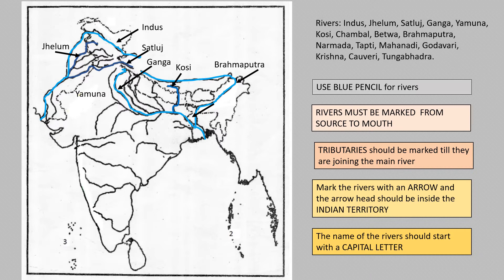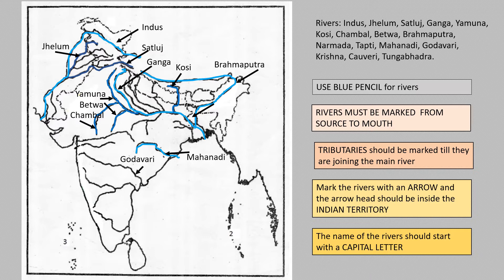Now let's see the right bank tributaries. The big one, first one, is Yamuna. Then there are two more — this is Chambal, and the other one is Betwa. These are in the northern plains. Coming down, this is Mahanadi — again from starting till ending.